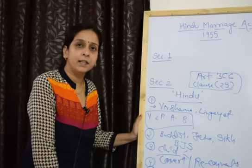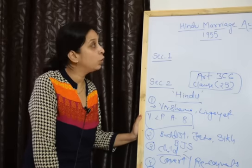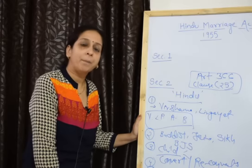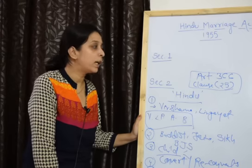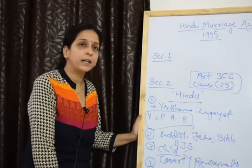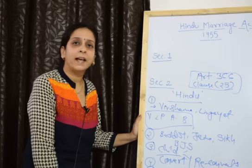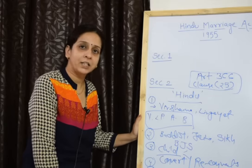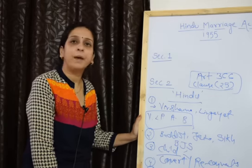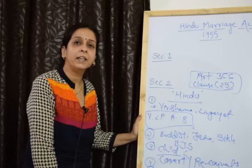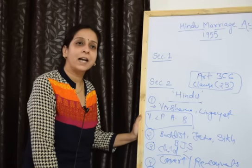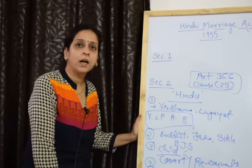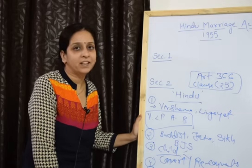So today we have seen the first part of the Hindu Vivaha Adhiniyam — the short title and extent of the act under Section 1, and the application of the act under Section 2. These are the two basic sections of the Hindu Marriage Act 1955. In our next class, we will discuss the definitions under the act. Thank you.